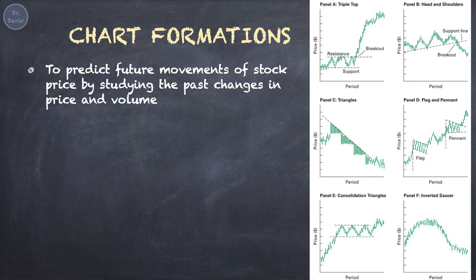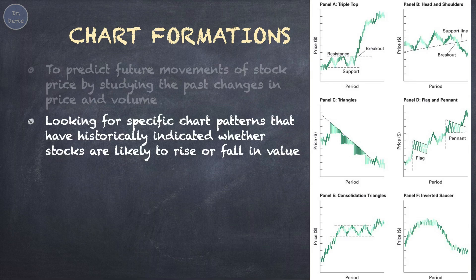Chart formations are used in technical analysis, in which traders attempt to predict future movements of stock price by studying the past changes in price and volume. The idea is that patterns in historical data may repeat or signal future trends. Technical analysts search for specific chart patterns or formations that have historically indicated whether stocks are likely to rise or fall in value. These patterns can serve as signals for traders and investors to make buy or sell decisions. Examples of chart formations include head and shoulders, double tops, and cup and handle patterns.